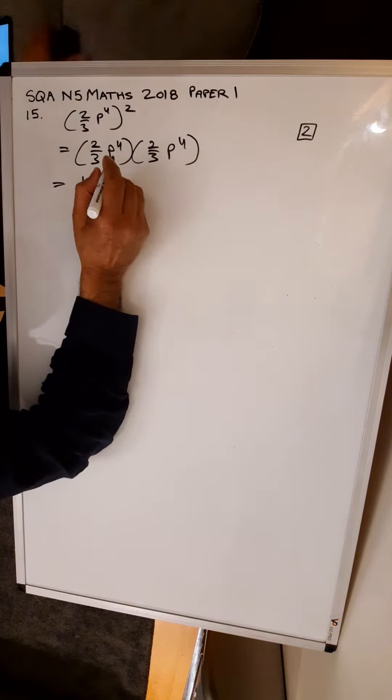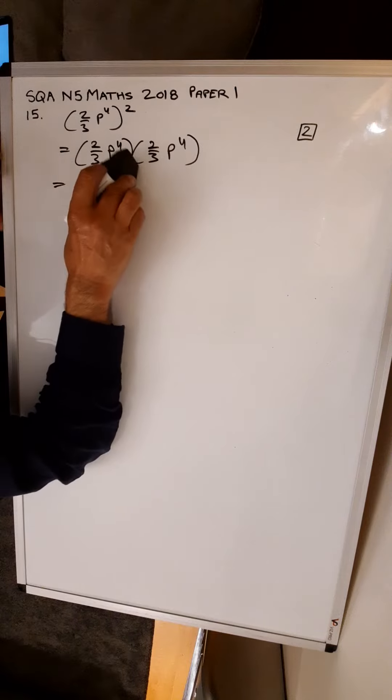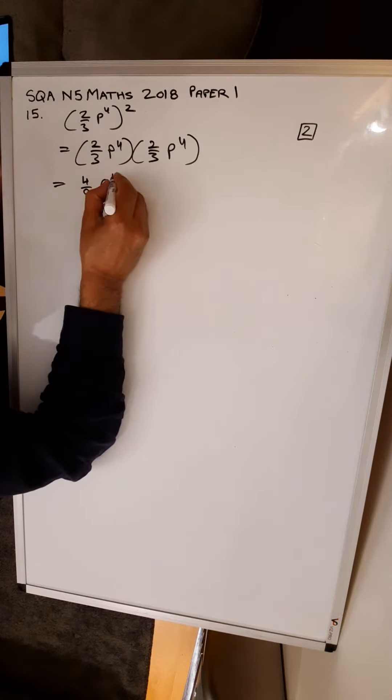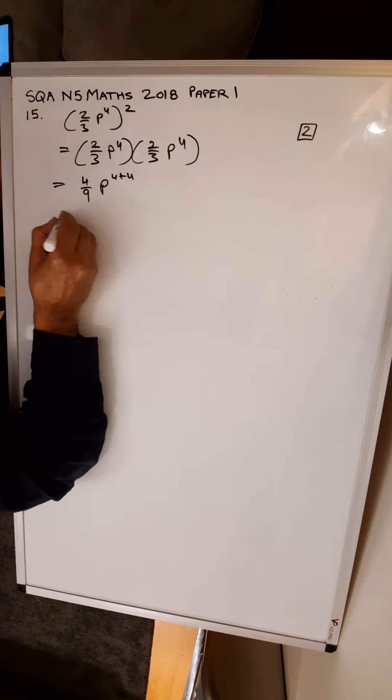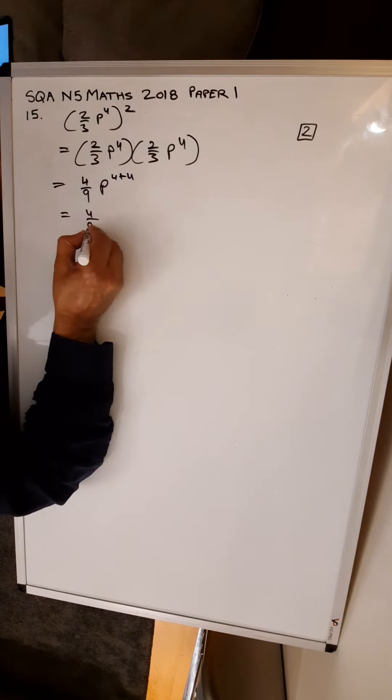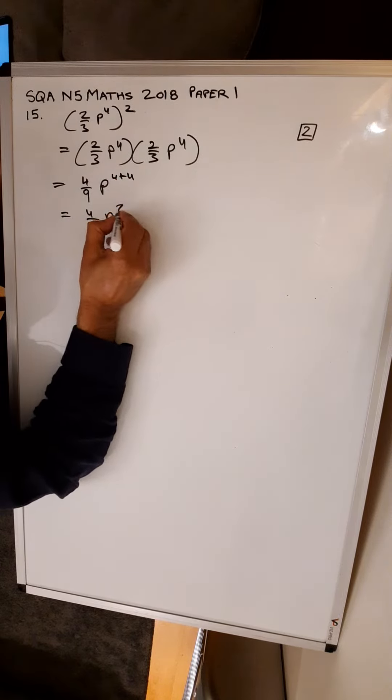p to the 4 plus 4. You can add an extra step if you want, so that would be 4 plus 4. That gives you 4 over 9 p to the 8.